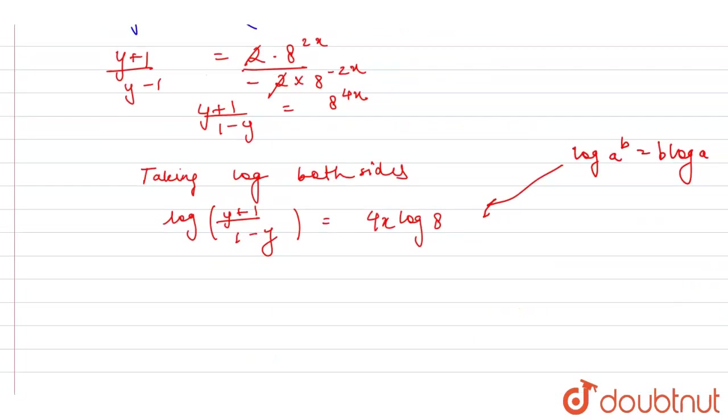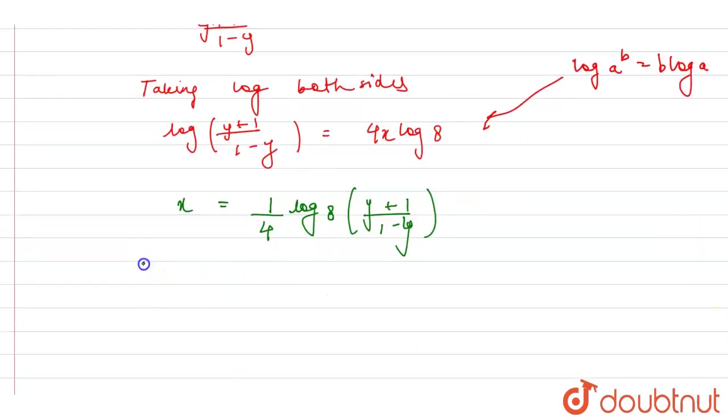So we got this, then we can write this as x is equal to 1 by 4. Now taking log base 8, so 1 by 4 log base 8 of y plus 1 upon 1 minus y. Okay, so this is x. So if we calculate f inverse x, what do we get?